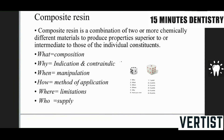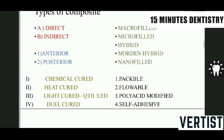If you see this composite resin, they have different types according to their use. They are direct and indirect. That means it can be placed directly inside the oral cavity, or the restoration is fabricated outside and then placed inside the oral cavity — that is your direct type and indirect type.